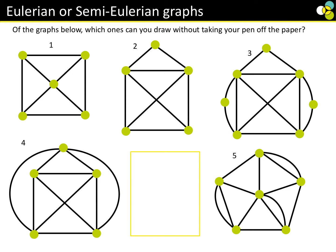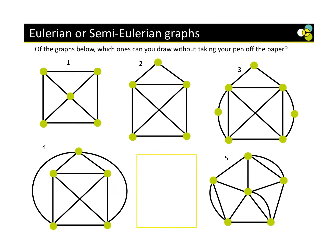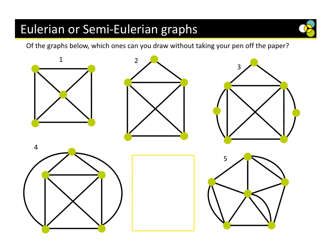We should have found that we can actually draw graphs four and five. For graph four, let's say I start here — I can go one, two, three, four, five, six, seven, eight, nine, all the way back. I've done that. I can do the same with five.